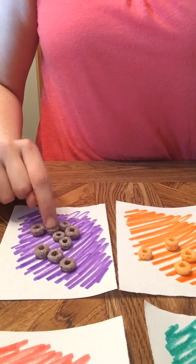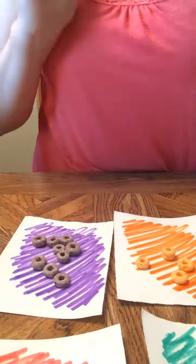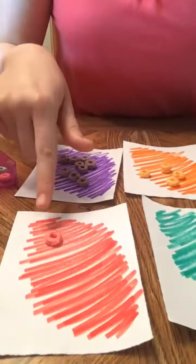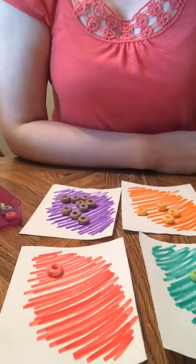So let's see. Let's see which one. The purple one has the most and it has one, two, three, four, five, six, seven, eight, nine, and the red one has the least with only one.